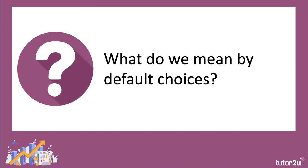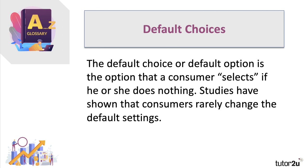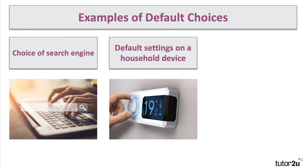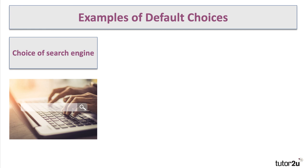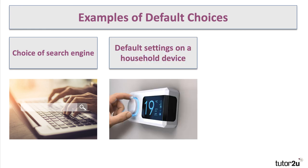Now let's think about what we mean by default choices. In economics there's so much that is a default. The default choice or default option is simply the option that a consumer selects if he or she decides to do nothing. Studies have shown that consumers rarely change the default settings, so the nature of the default option really strongly affects consumer behaviour. If you change the default, consumer behaviour can change pretty fundamentally, but it's hard to do that. Some examples of default choices: the choice of search engine is quite important — many people have chosen Google as their default and won't move to any other search engine once they've locked onto that.